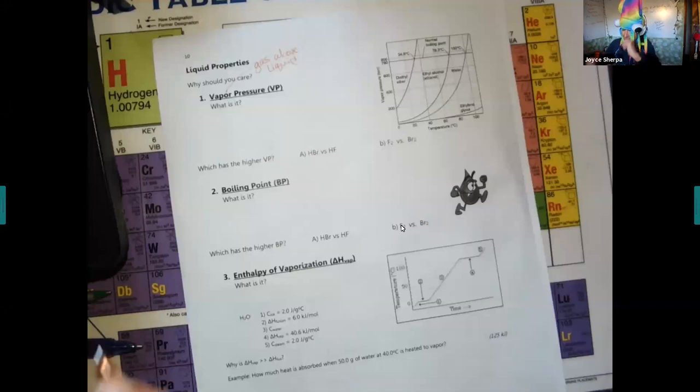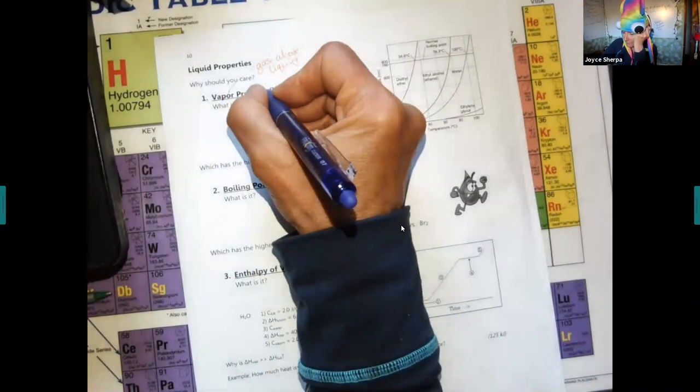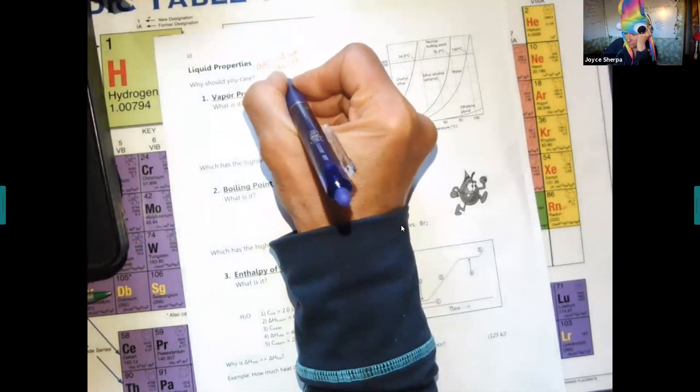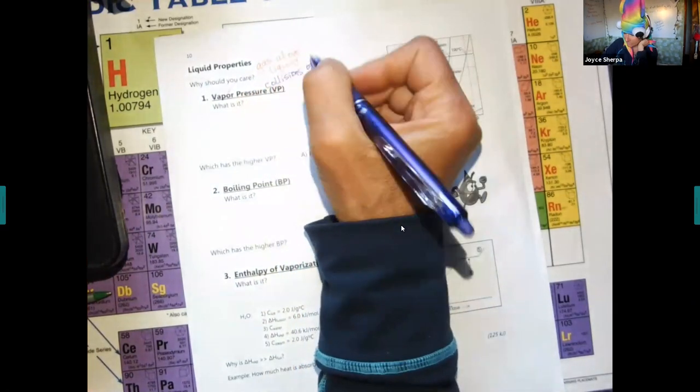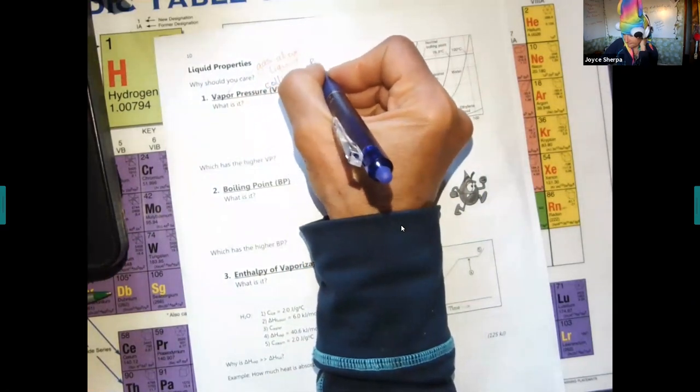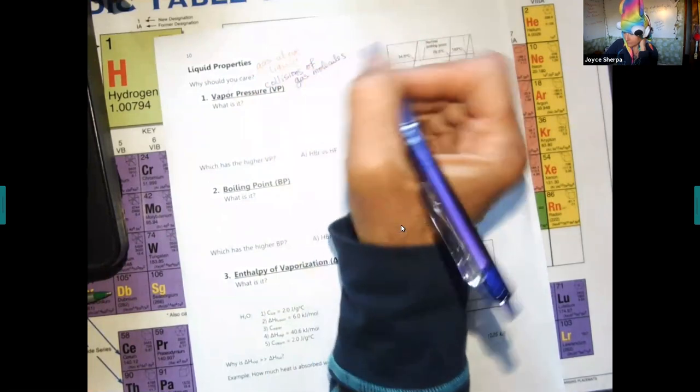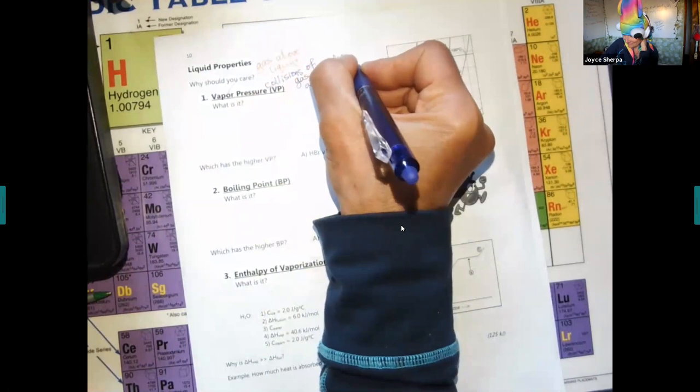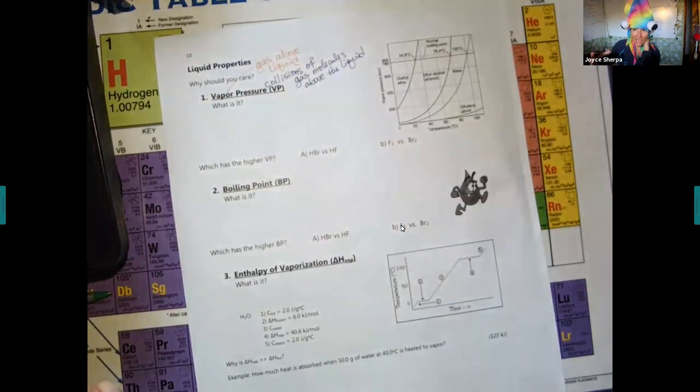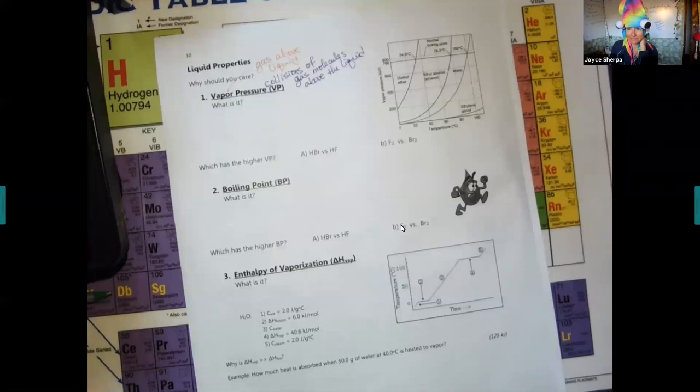Gases are something that's already there in the gas state. A vapor is something that becomes a gas because it's evaporating from the liquid. Really, they're the same thing, but it's just a fine tuning. Pressure we're going to talk about in a lot of detail next week. Pressure is, in one word, collisions. In chemistry, it's collisions of the gas molecules above the liquid.